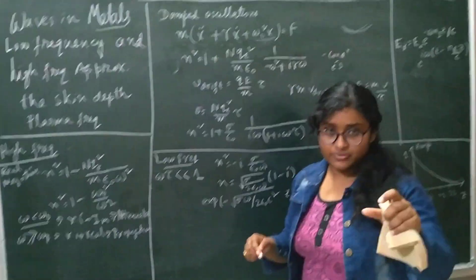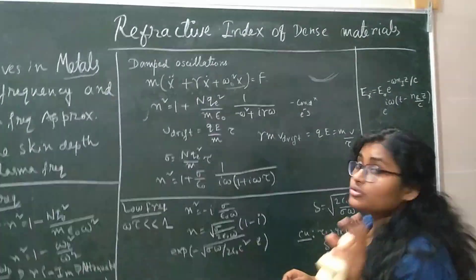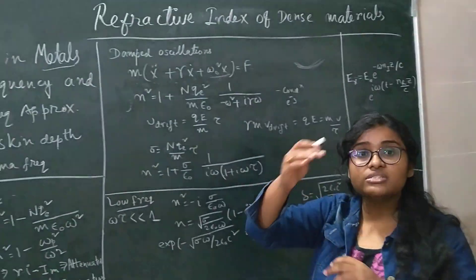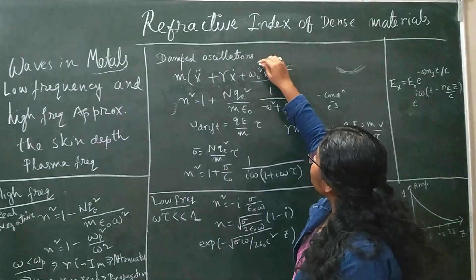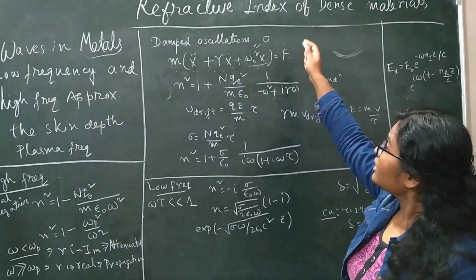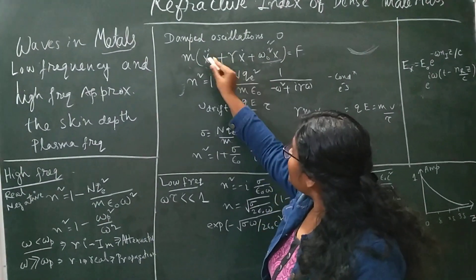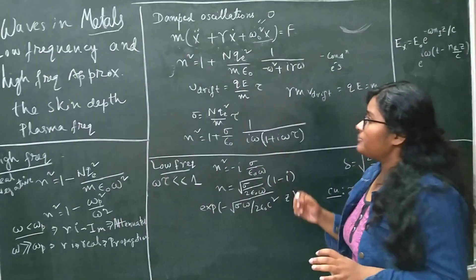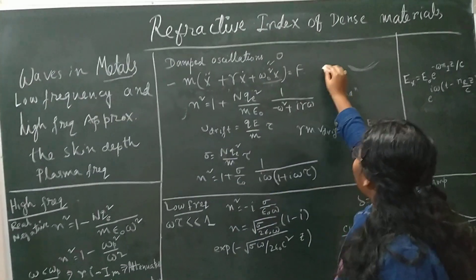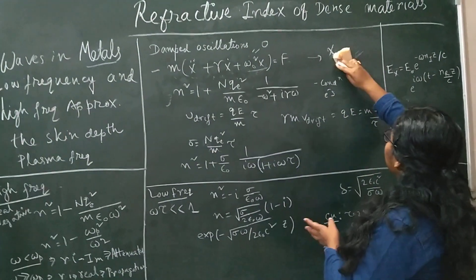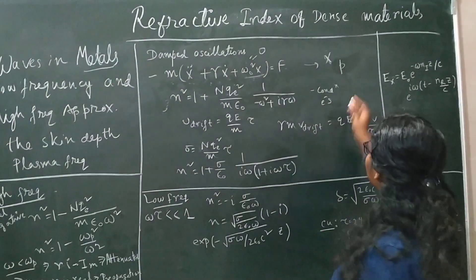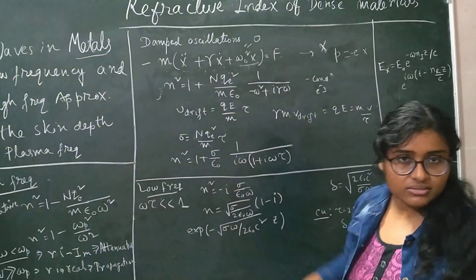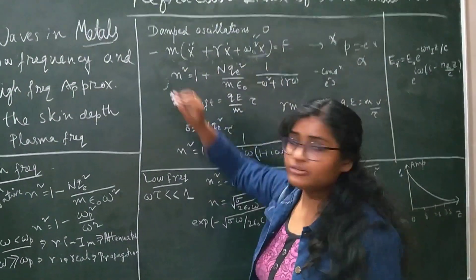For free electrons, there is no restoring force, so I set the ω₀² term to zero — there is no oscillation driving the electron back to a position. For the metal case, the equation of motion becomes M·ẍ + γẋ = applied force. From this equation I calculate the displacement x, then the dipole moment P = qx, then polarizability α, and I obtain the value of n²— the refractive index squared.